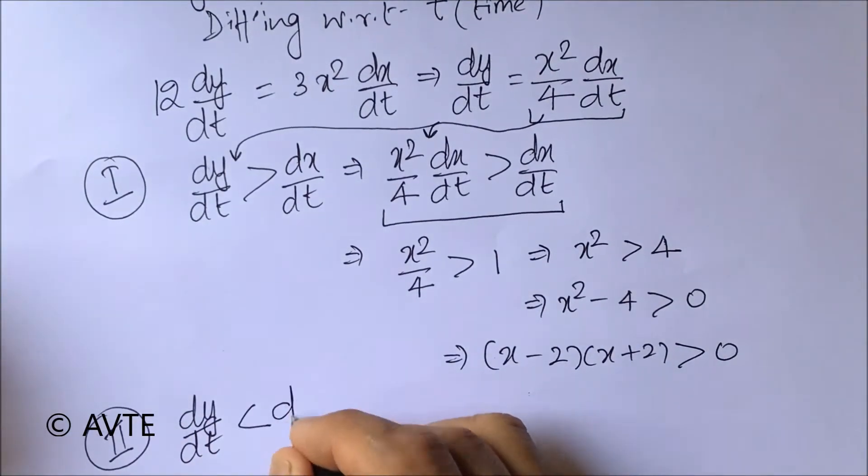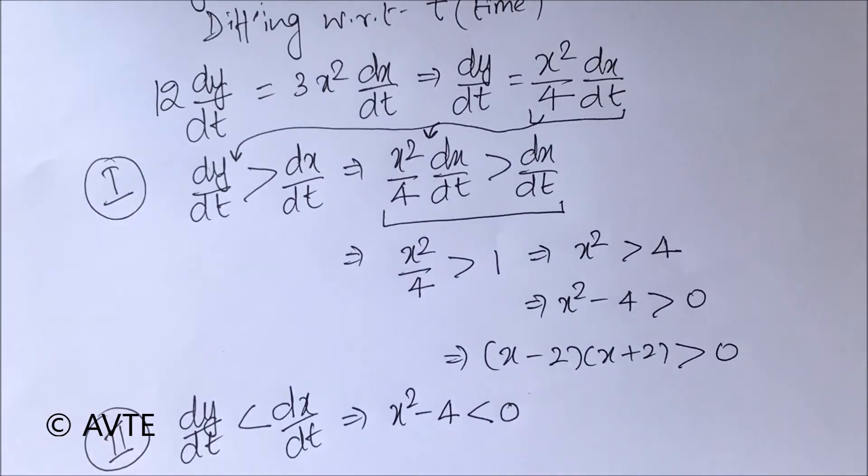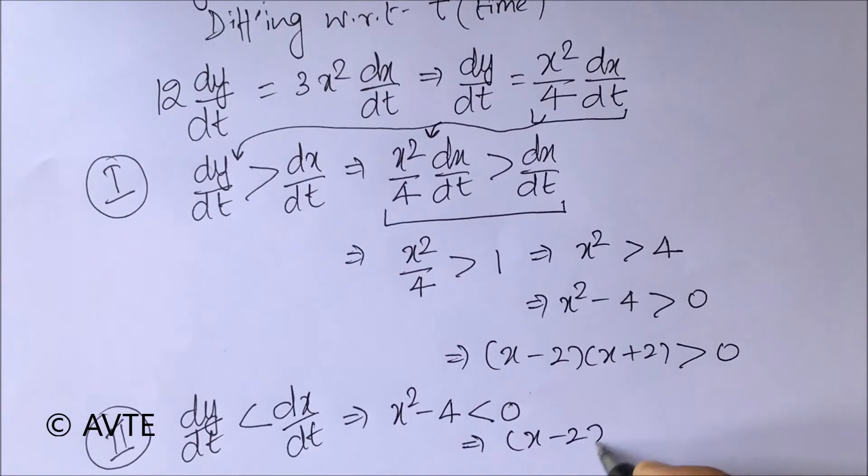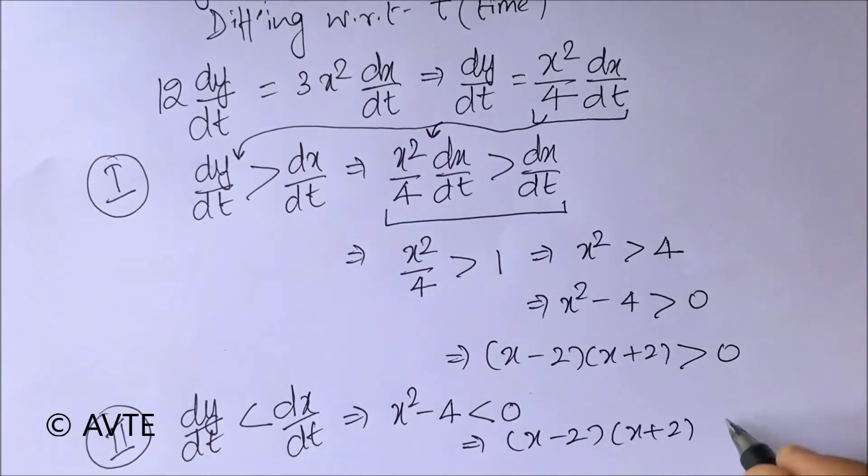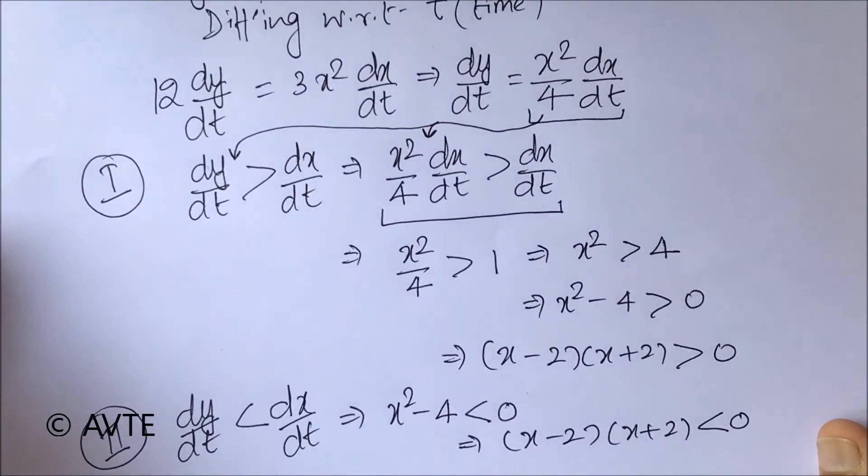The second case where dy/dt is less than dx/dt. In that we'll be getting x squared minus 4 less than 0, and x minus 2 times x plus 2 is less than 0. Now we can use a number line or the wavy curve method and solve everything at the same time.